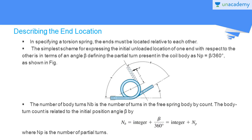Now we are going to see the specifications of helical coil torsion springs — specifically describing the end location. In specifying a torsion spring, the ends must be located relative to each other. The simplest scheme for expressing the initial unloaded location of one end with respect to the other is in terms of an angle given by beta, defining the partial turns present in the coil body as NP equals beta divided by 360 degrees. Here you can see a typical helical coil torsion spring where beta is the angle between one end with respect to the other end.